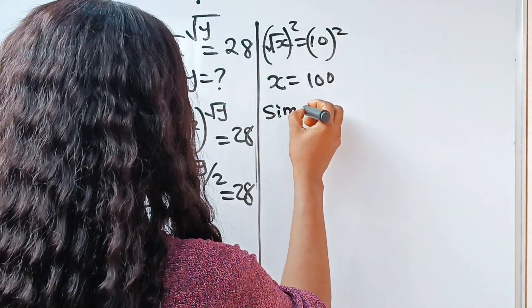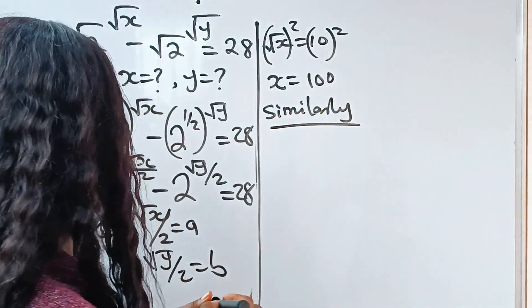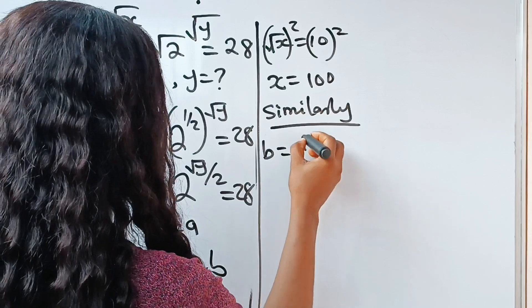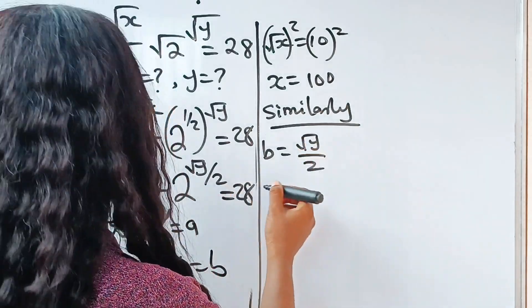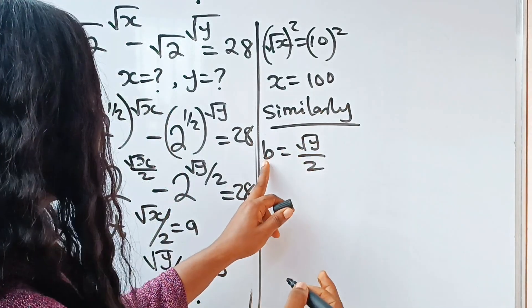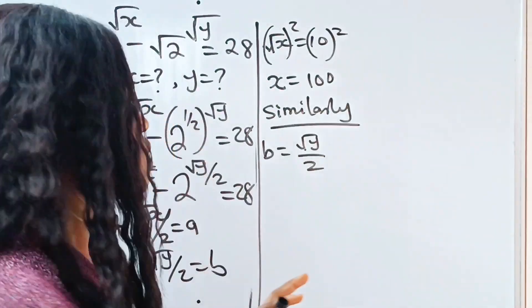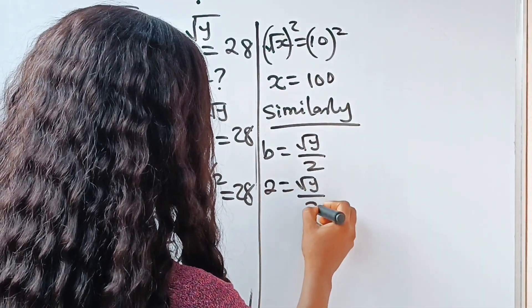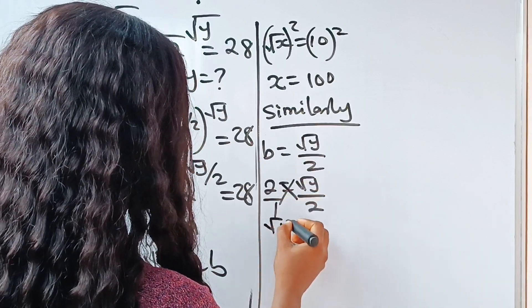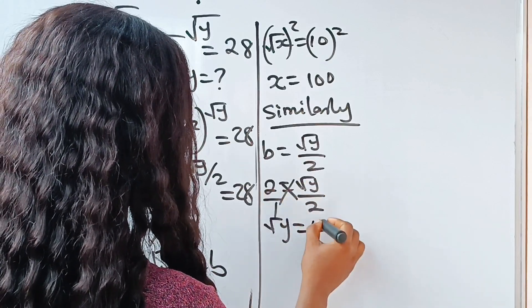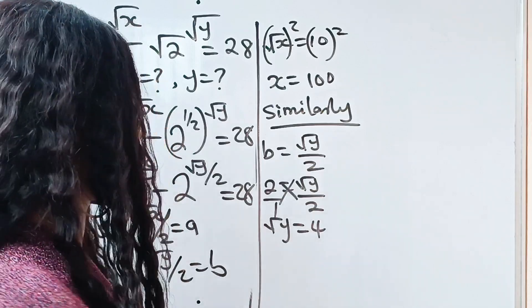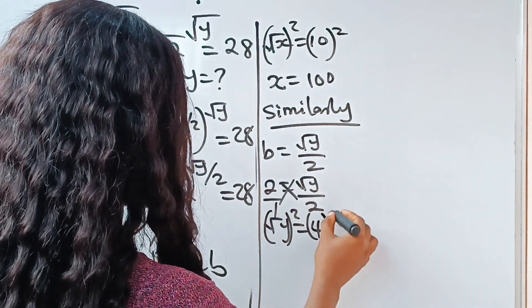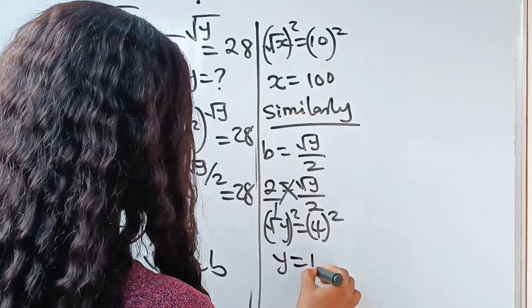Similarly, recall that b equals root y divided by 2, and we got b equals 2. So 2 equals root y over 2. Cross multiplying gives root y equals 4. Squaring both sides, we have y equals 16.